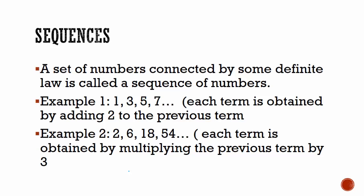in this sequence we have 1, 3, 5, 7. So we see the first number is 1, the second number is 3, the third number is 5, the fourth number is 7.